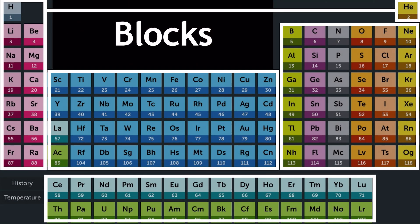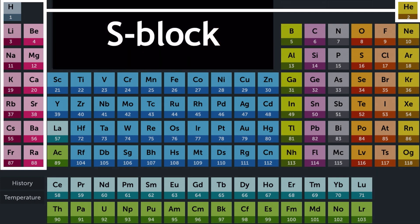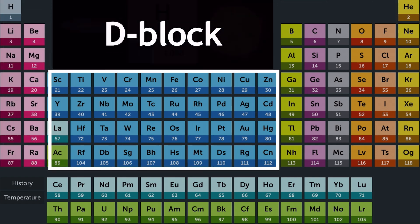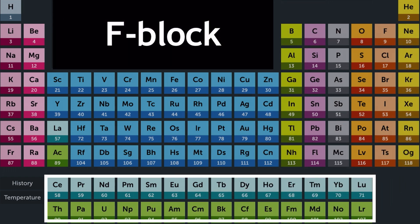We also have the elements organized by blocks. The blocks identify the subshell location of an element's highest energy electron — the one in its outermost shell, furthest away from the nucleus, described in terms of energy. The s-block elements have their highest energy electron in an s subshell. We have the d-block elements in the middle, the p-block elements to the right, and the f-block elements at the bottom.